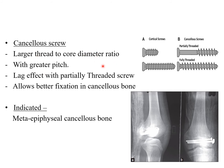The cancellous screw has a larger thread-to-core diameter ratio, greater pitch (distance between threads), and lag effect with a partially threaded design. This allows better fixation in cancellous bone because of the loose, spongy bony structure — the larger thread spacing ensures the screw is properly fixed. It is indicated in metaphyseal and cancellous bone fractures.